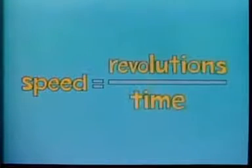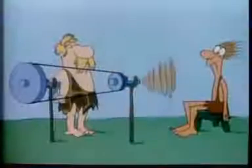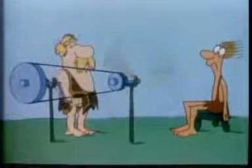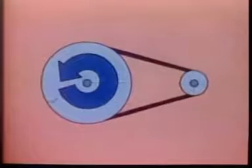We measure these speeds in revolutions per unit time — usually revolutions per minute or RPMs. This wheel is turning at about 60 revolutions per minute and this one is turning at three times 60, or 180 revolutions per minute. There's a trade here too. This wheel turns three times as fast, but in order to get it to turn with a certain amount of force, you have to apply three times that force to the other wheel. You trade force to get speed.